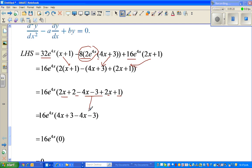So this 4x and -4x gets cancelled, +3 and -3 gets cancelled, so that is 16e^(4x) times 0, which is 0.